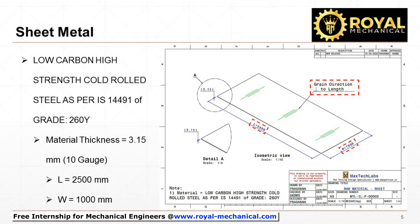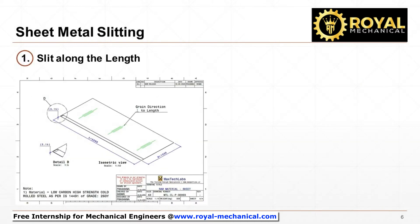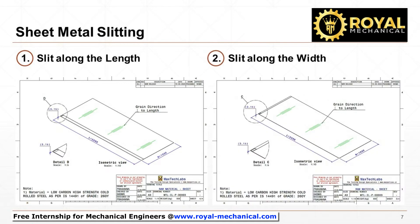I am sure by now you have a clear understanding that the sheet metal is slit into strips. We have two options to slit the sheet metal. Option 1: slit along the length of the sheet metal. Option 2: slit along the width of the sheet metal.